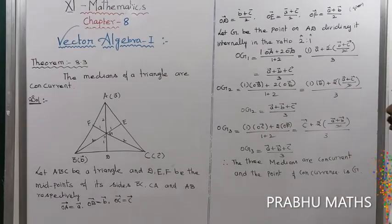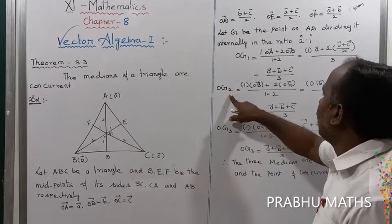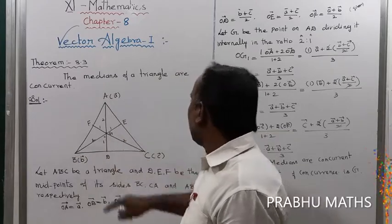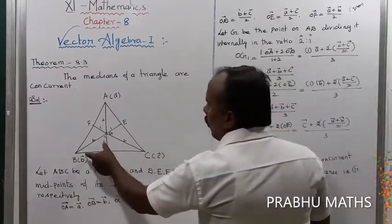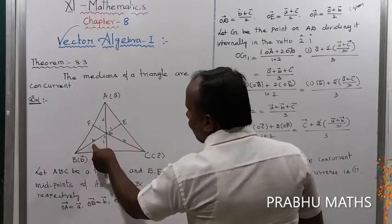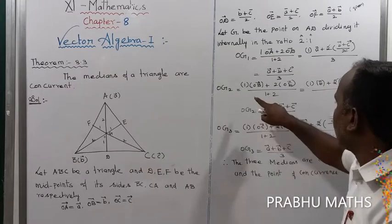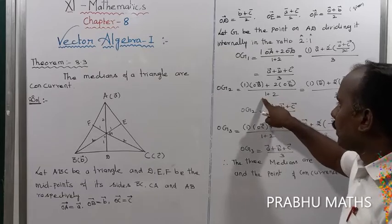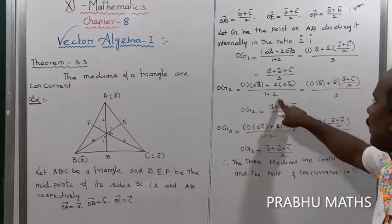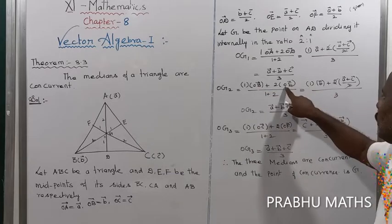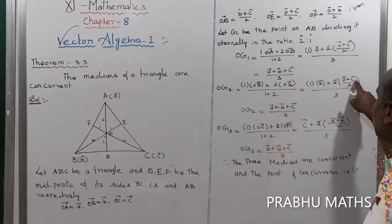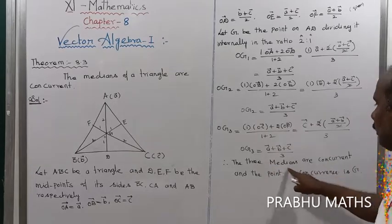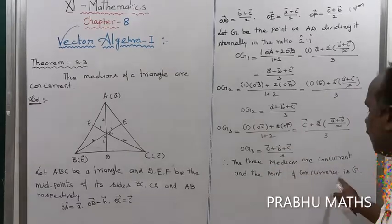For the second median BE, G2 divides BE in ratio 2:1. Using the section formula: OG2 = (1 × OB + 2 × OE) / (1 + 2). Substituting OB = B and OE = (A + C) / 2, we get OG2 = (A + B + C) / 3. Similarly for G3 on CF. Therefore all three medians are concurrent, meeting at point G where OG = (A + B + C) / 3.